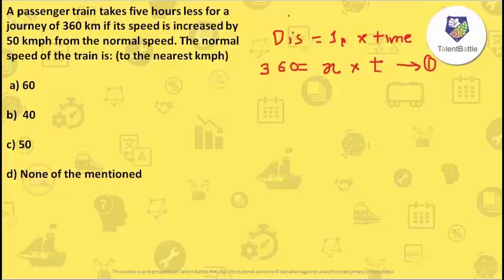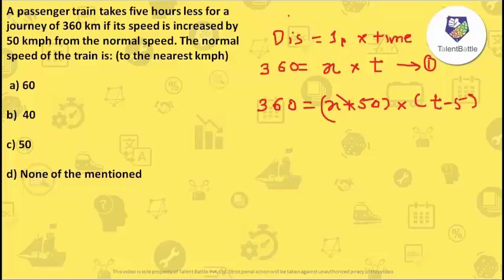Whenever the train travels at normal speed x, it takes time t. Now, if the speed is increased by 50, the new speed is x plus 50. The train takes 5 hours less, so the new time is t minus 5. The distance remains 360. To find x, I substitute t as 360/x into the second equation: 360 equals (x + 50) multiplied by (360/x minus 5).